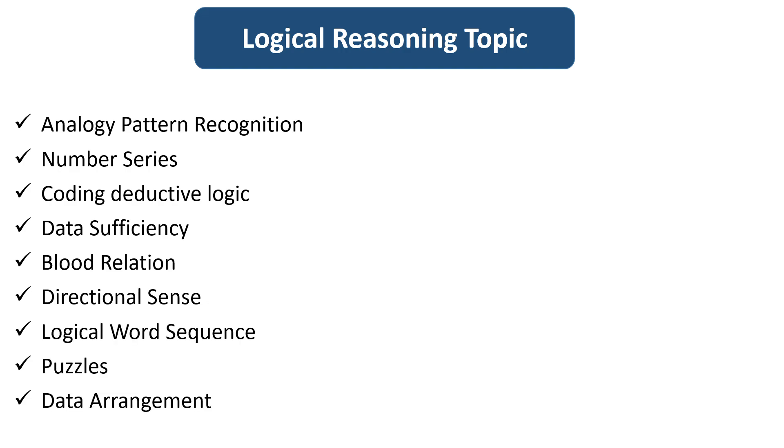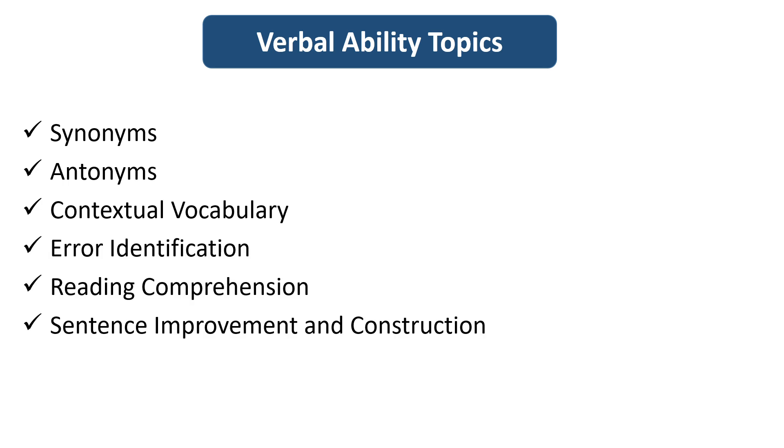Now next we will see the important topics from the verbal ability or English comprehension. The topics are synonyms, antonyms, contextual vocabulary, error identification, reading comprehension, sentence improvement and construction.